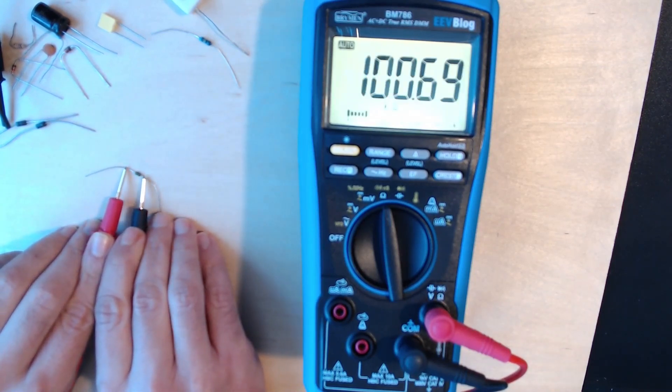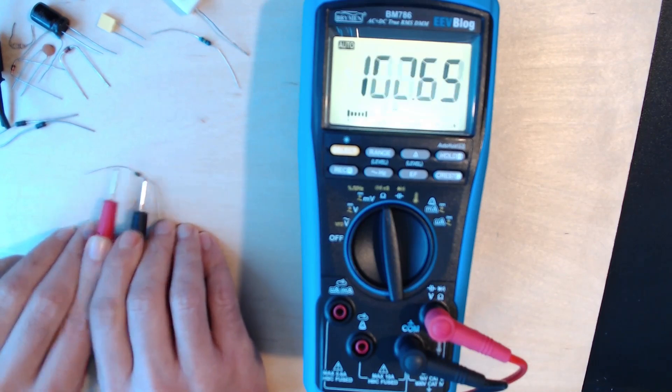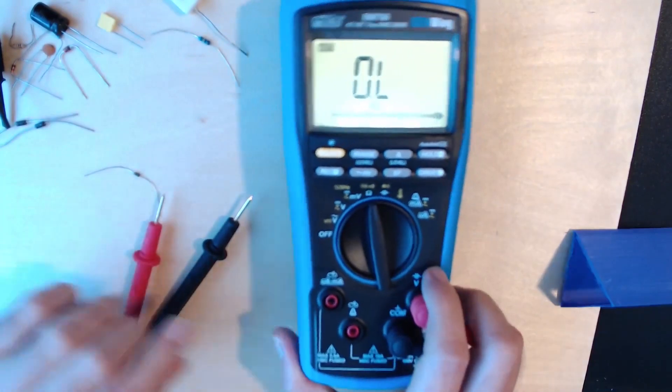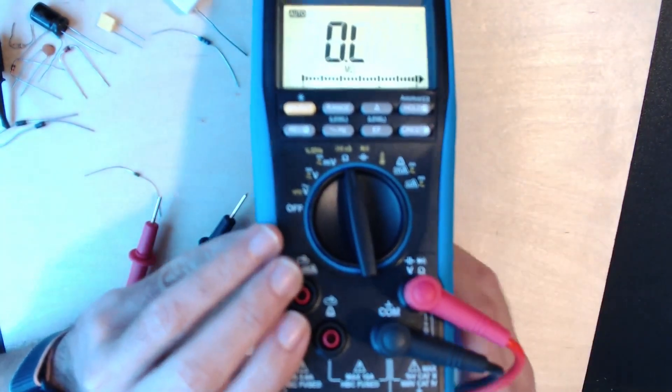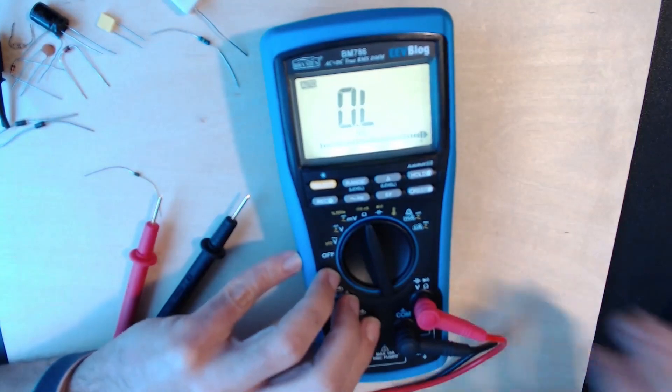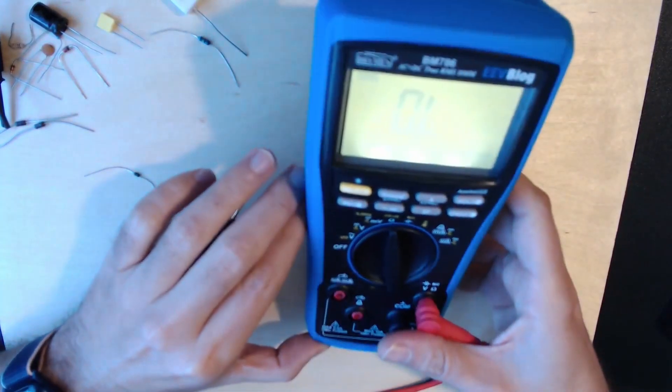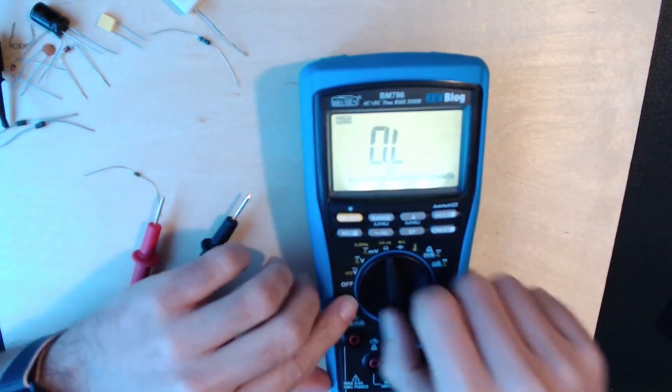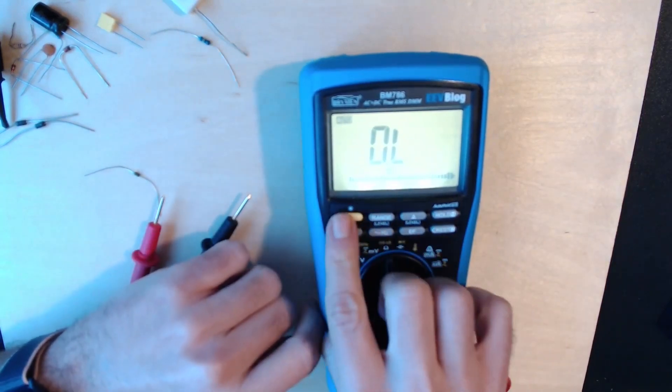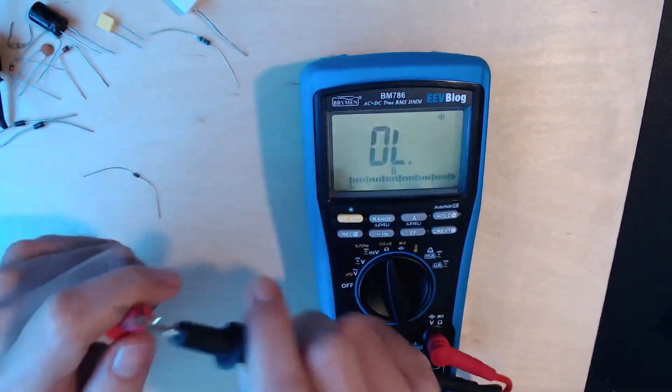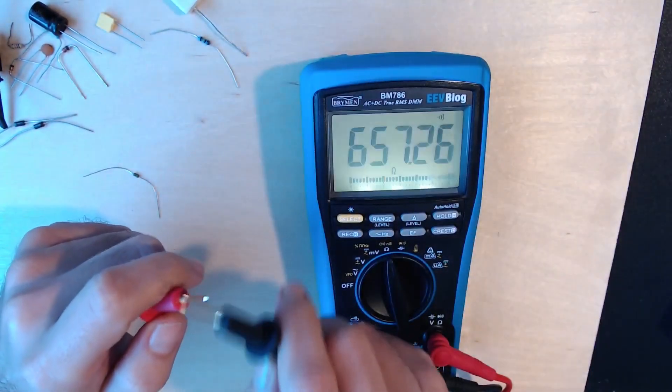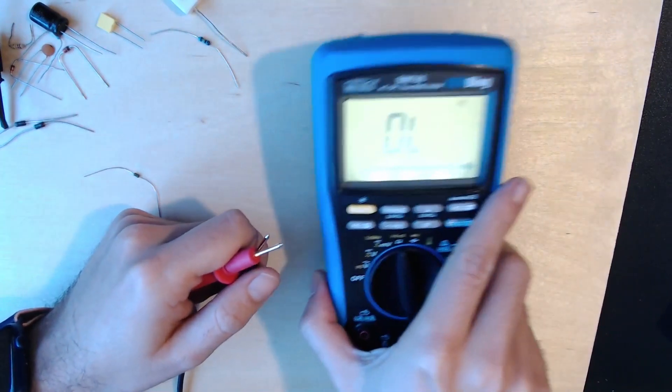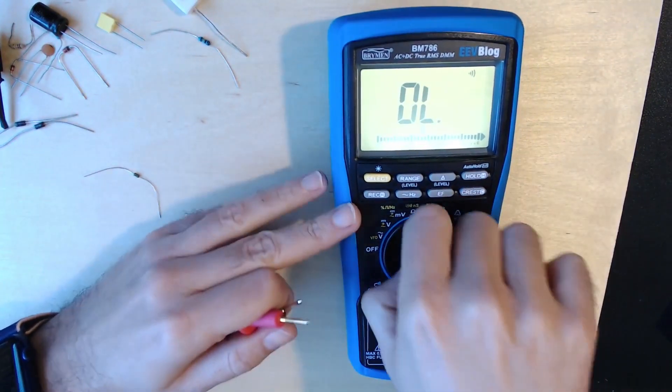We have a 100k resistor here. Yeah, it's 100k. Let's do a bit of continuity testing. You can change the function using the select button, and it's real fast.